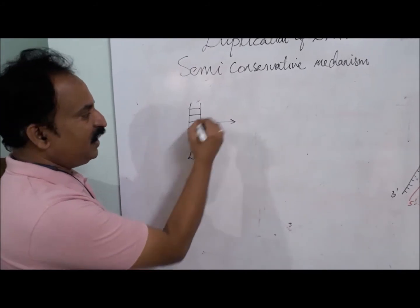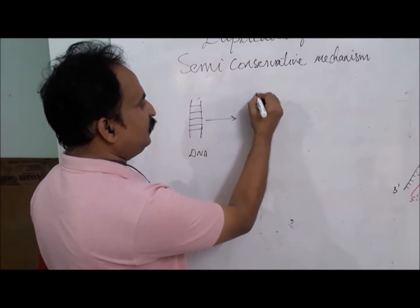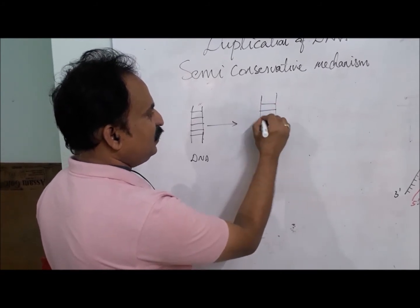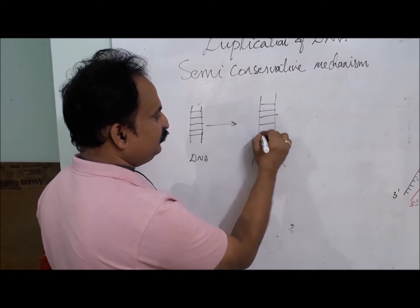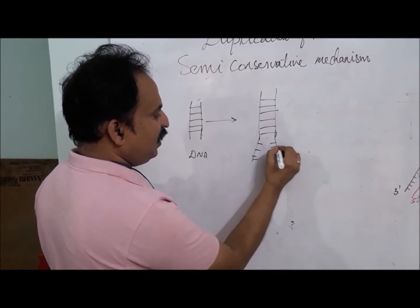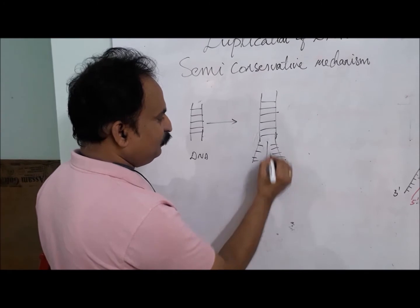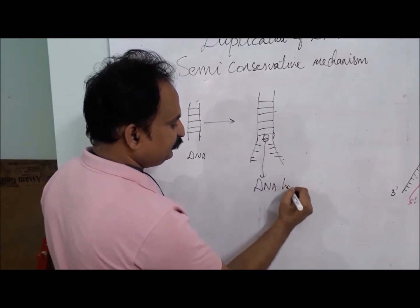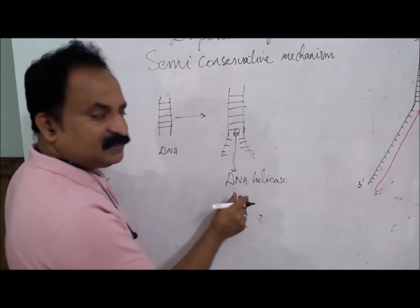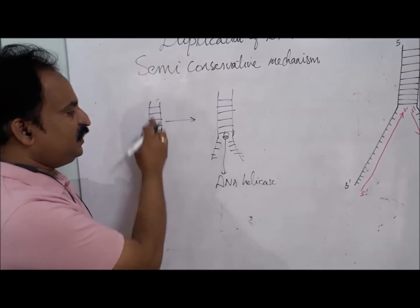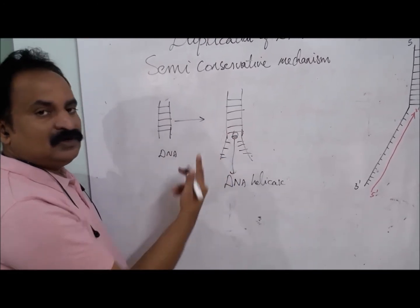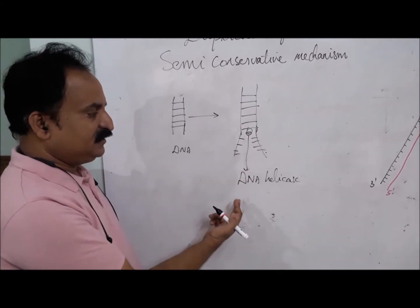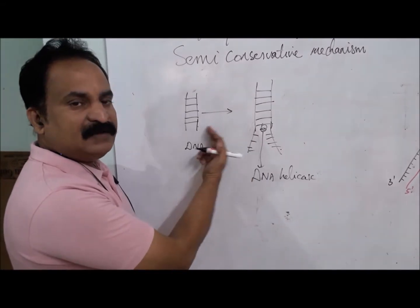The double-stranded DNA will first unbind or unzip, with the help of the enzyme called DNA helicase. DNA helicase is otherwise called the unzipping enzyme, which unzips the double-stranded DNA.